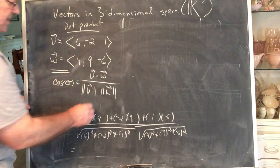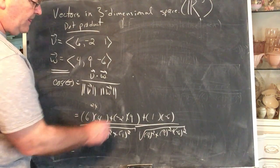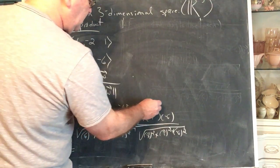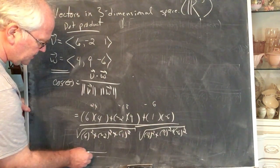But what happens here is kind of nice. This is 24. This is negative 18. This is negative six. This numerator is zero.